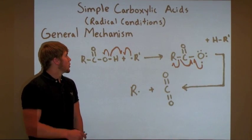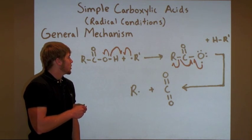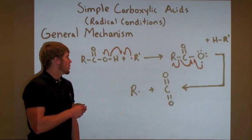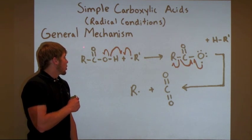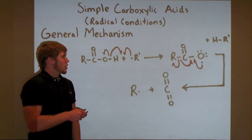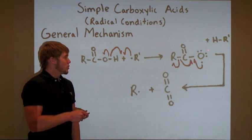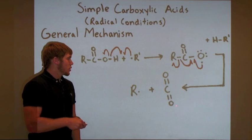For the mechanism of the decarboxylation of simple carboxylic acids under radical conditions, a radical is shown here to abstract the hydrogen atom from a carboxylic acid to yield a carboxyl radical and the byproduct HR. Carboxyl radicals are rather unstable and spontaneously decarboxylate to form carbon dioxide and another radical.